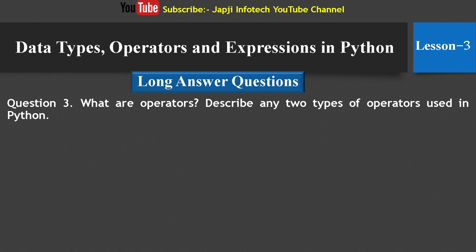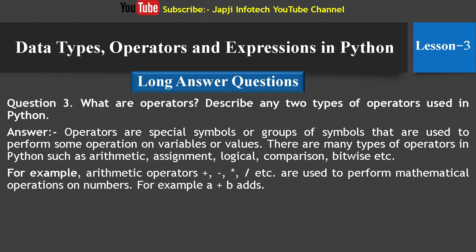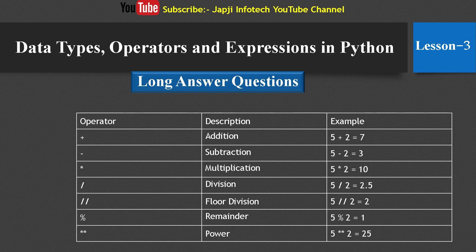Third long answer question: What are operators? Describe any two types of operators used in Python. Answer: Operators are special symbols or groups of symbols used to perform operations on variables or values. There are many types of operators in Python: arithmetic, assignment, logical, comparison, bitwise, etc. For example, arithmetic operators — plus, minus, asterisk, forward slash — are used to perform mathematical operations on numbers, such as a + b which adds two numbers. Comparison operators such as equal to, not equal to, greater than, less than, etc., compare two values and return true or false.